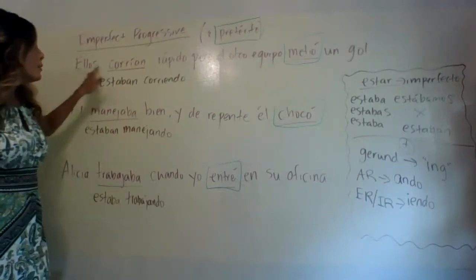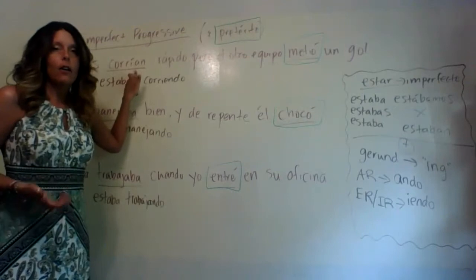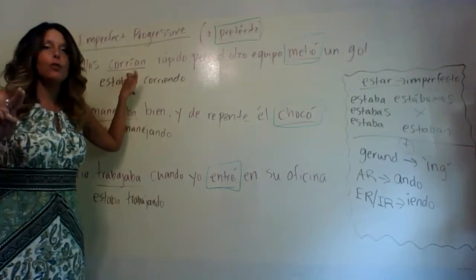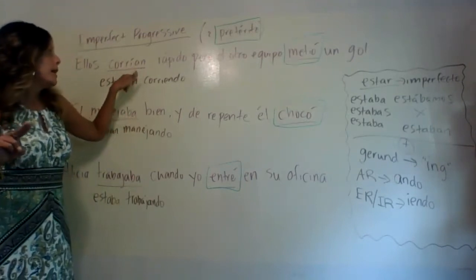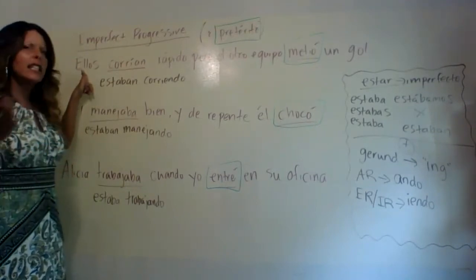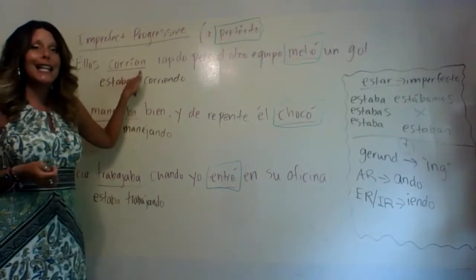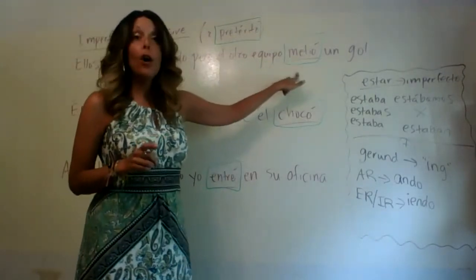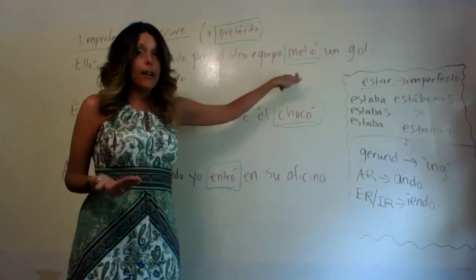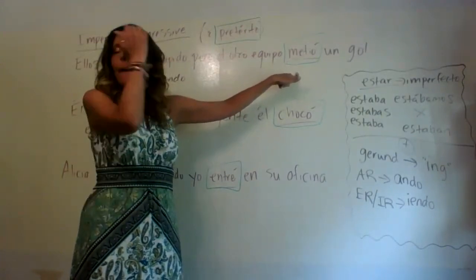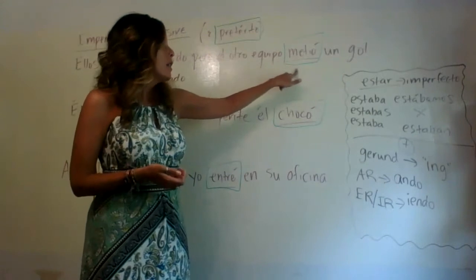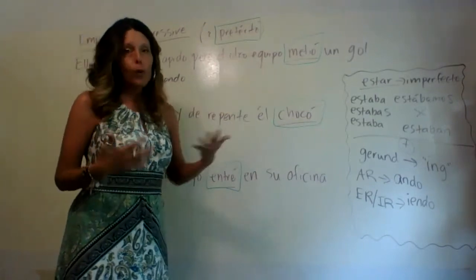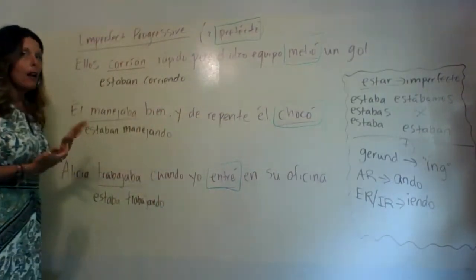The first sentence: ellos corrían. Corrían is the imperfect of the verb correr, meaning 'to run,' conjugated based on ellos. We have ellos corrían rápido pero el otro equipo metió. Metió is the preterite of the verb meter, conjugated based on the subject el equipo, meaning 'the team.'